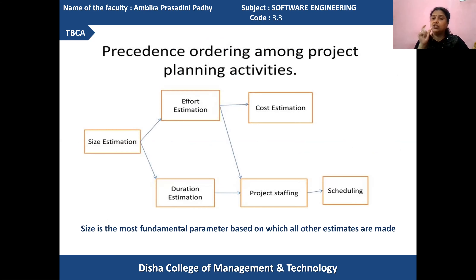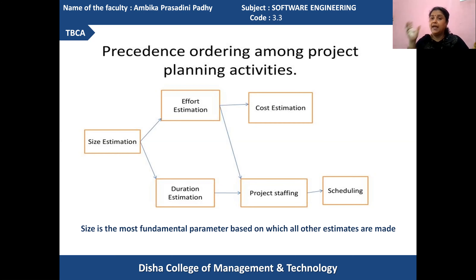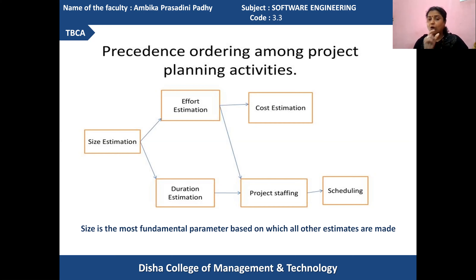According to these, what will be the cost required for investment in the product development process? When all this information is identified, the staff scheduling is prepared in order to arrange the activities very well and allocate their respective resources for performing the activities in a well-defined manner. By looking at different planning activities, you can determine that the project size estimation is the fundamental parameter for making all other estimates to be done perfectly.